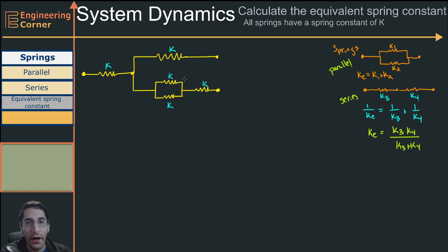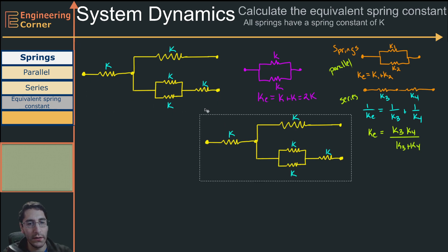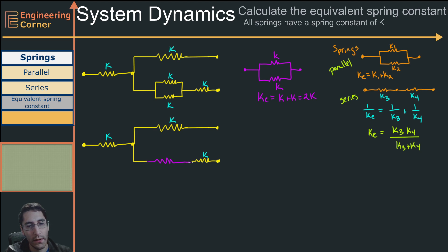When figuring out the equivalent spring constant, we break it down just like with resistors. Looking at the system, I can see a bunch of springs that are in parallel. I'll draw them over here: one has spring constant k and the other also has spring constant k. Since these are in parallel, my equivalent spring constant for this part is k plus k, which equals 2k. So I'll replace those two springs with an equivalent spring of 2k.